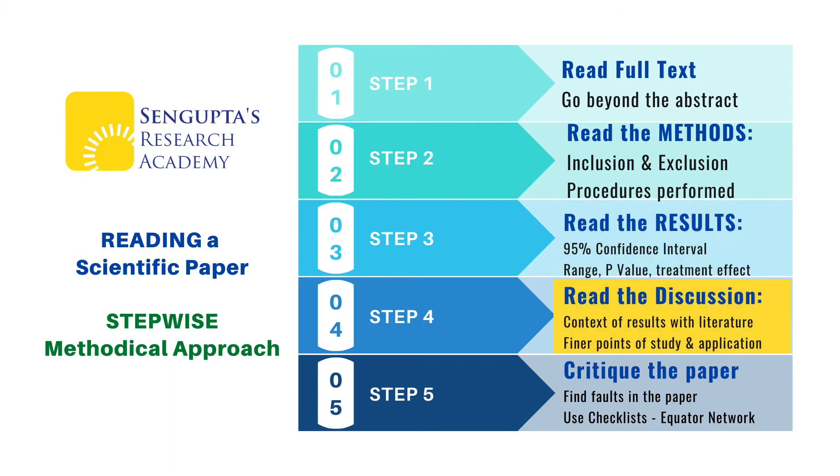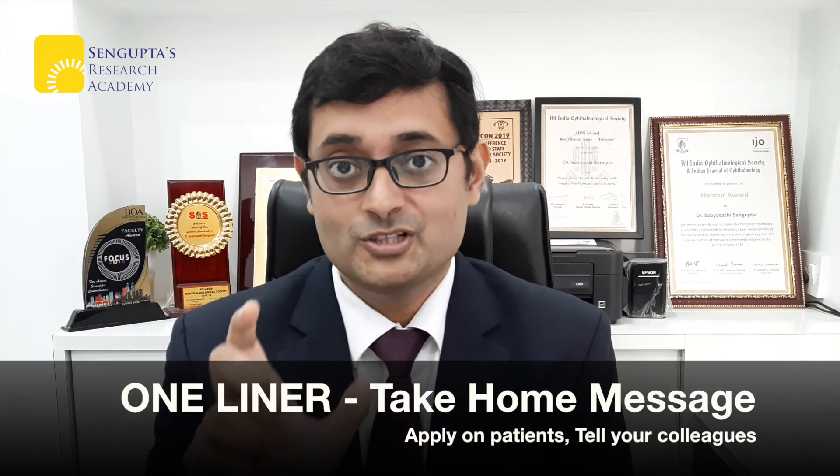Step 4: read the discussion of the full text. The first paragraph of the discussion is where the authors summarize what they found and the points they want to discuss. This is where you will get that one-liner to take home, apply to your patients, and tell your colleagues about. Reading through the discussion will also make you well aware of the actual context of where this paper and its results sit in the overall scheme of things. Also watch out for points of caution the authors may provide — for example, certain rare side effects which may be in very small print.